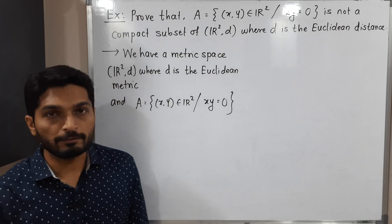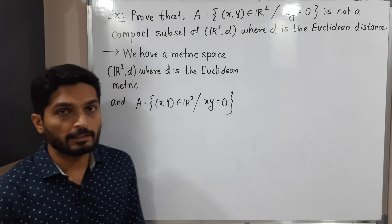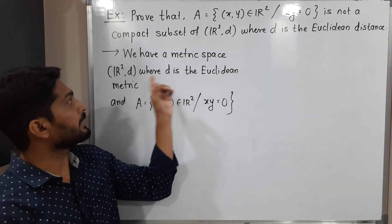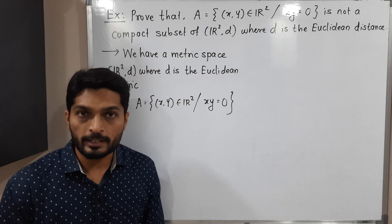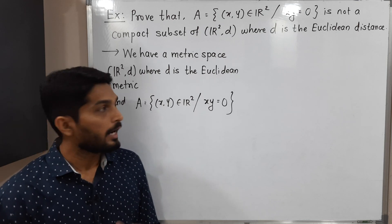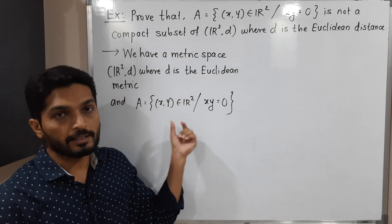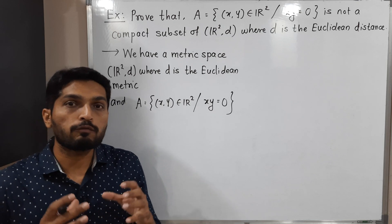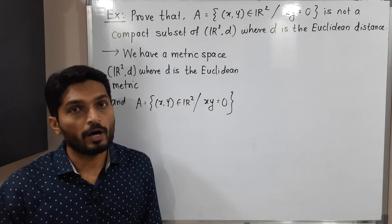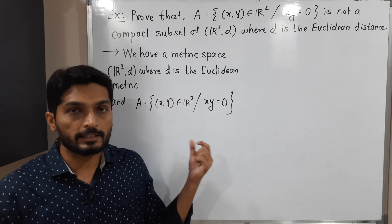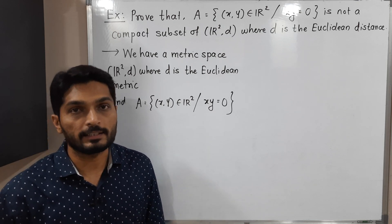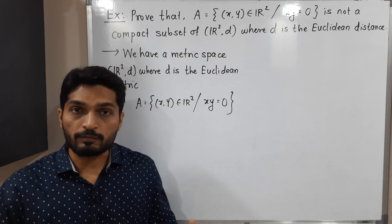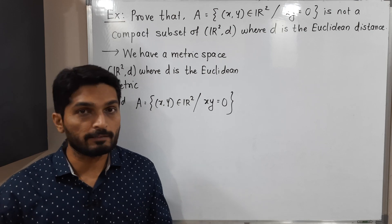Here I have written the given information. We have a metric space R²D where D is a Euclidean distance. A is a collection of all points of R² which satisfy the condition x·y = 0. Let us see first what is the given set.